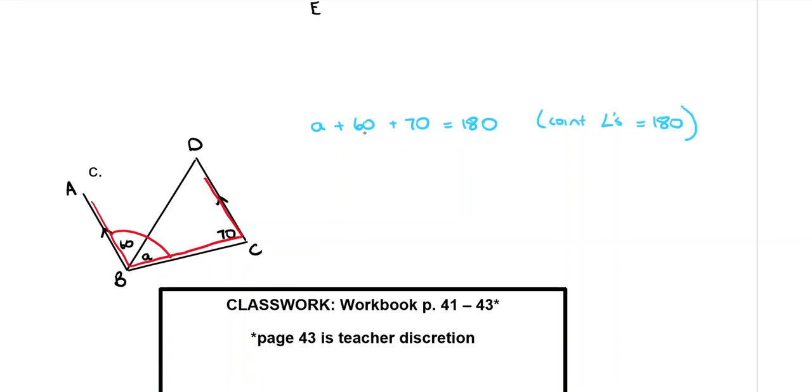To solve the equation, I'm going to have to add these numbers together first. 60 plus 70 makes 130. And then doing the opposite, I'm going to minus 130, which tells me that A is equal to 50 degrees.